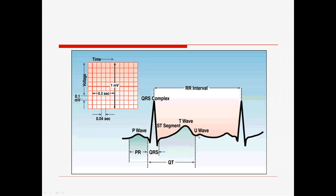If a patient has high potassium, they will have what's called a peaked T wave. The T wave spikes up higher — it can almost look like another QRS. A peaked T wave is a sign of high potassium in the blood.